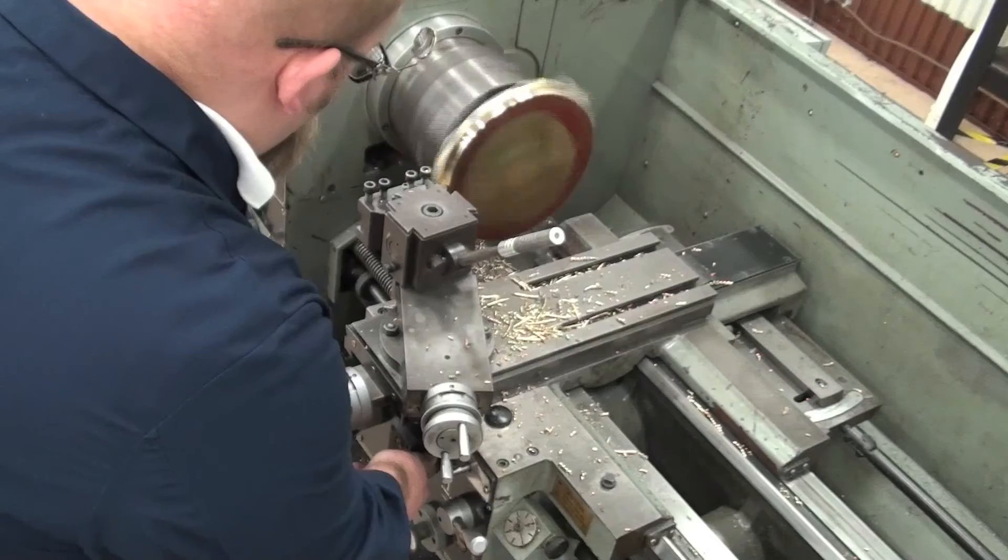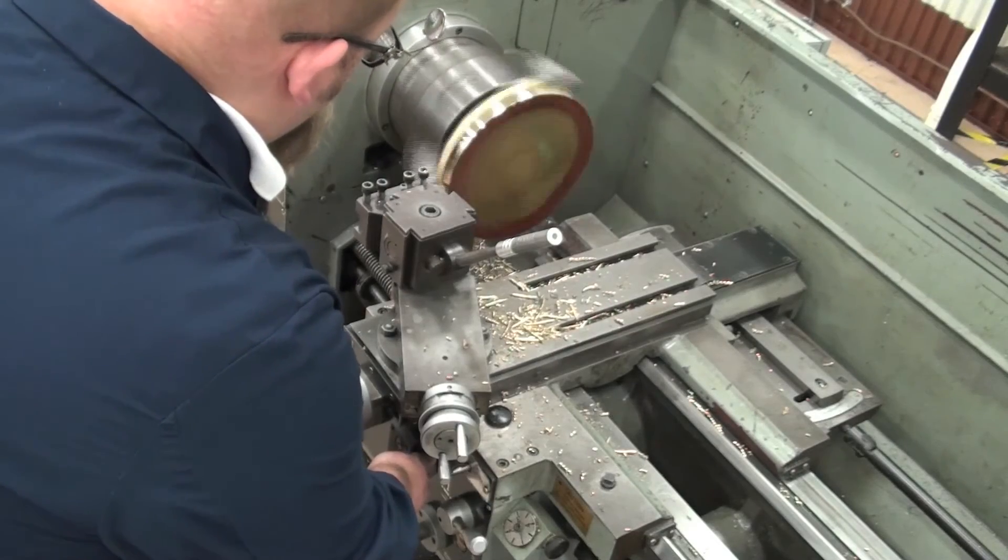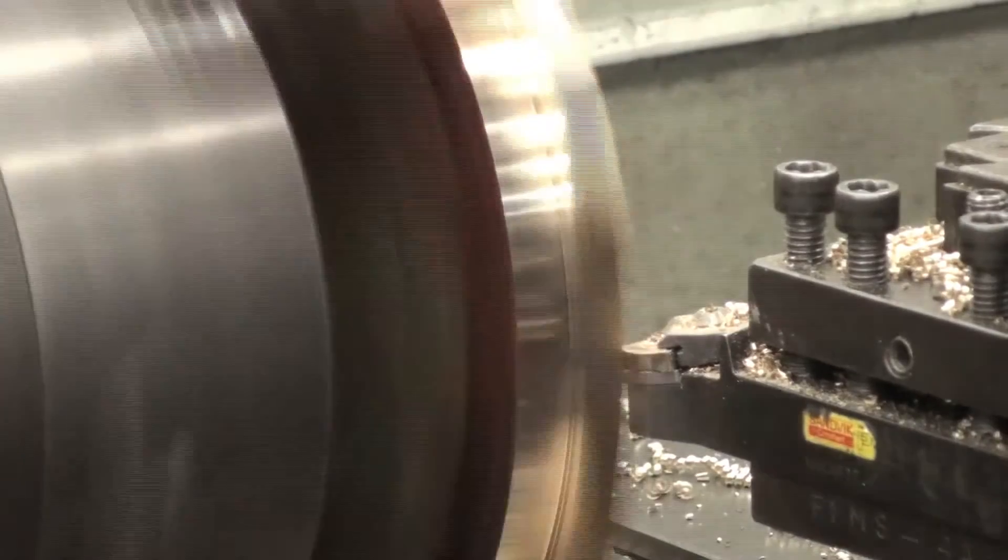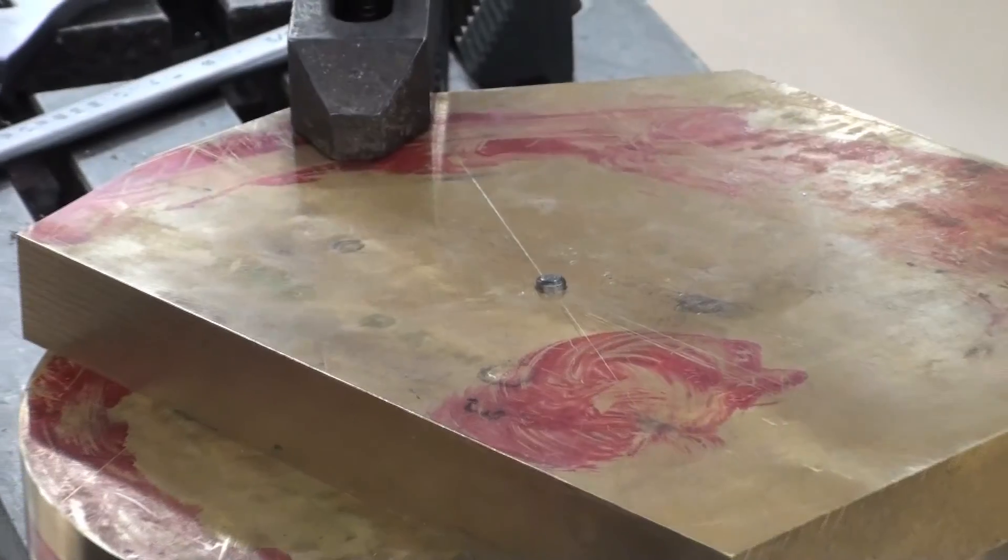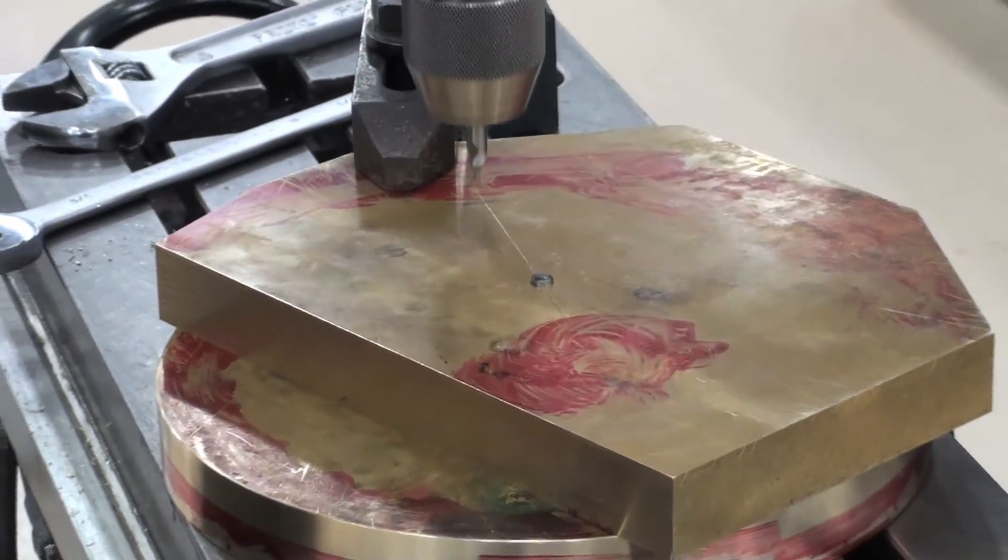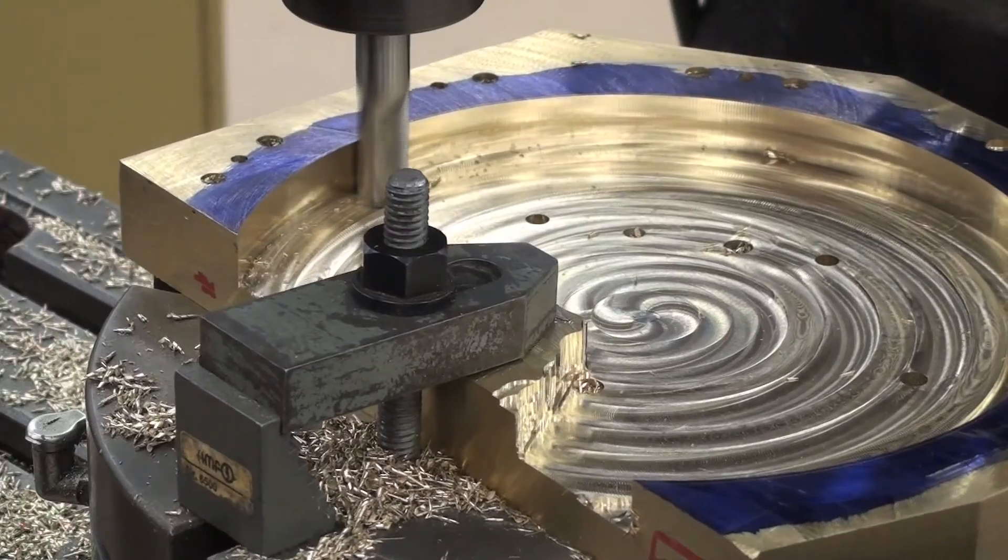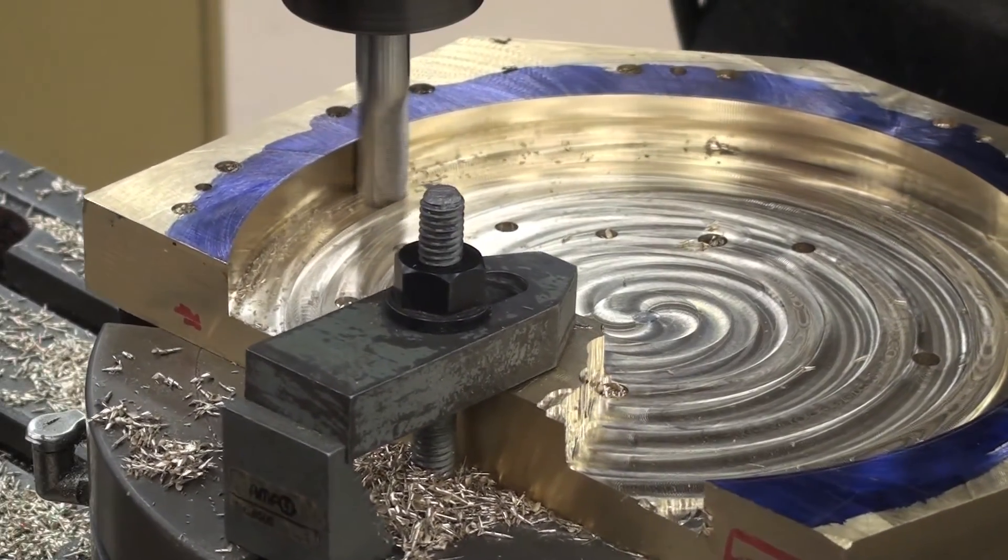We'll be looking for our next video where we're actually going to start the building process. We're going to actually take our large pieces of brass and actually start cutting out the shapes and turning all the diameters and drilling the holes and working through this model from start to finish. Thanks for viewing.